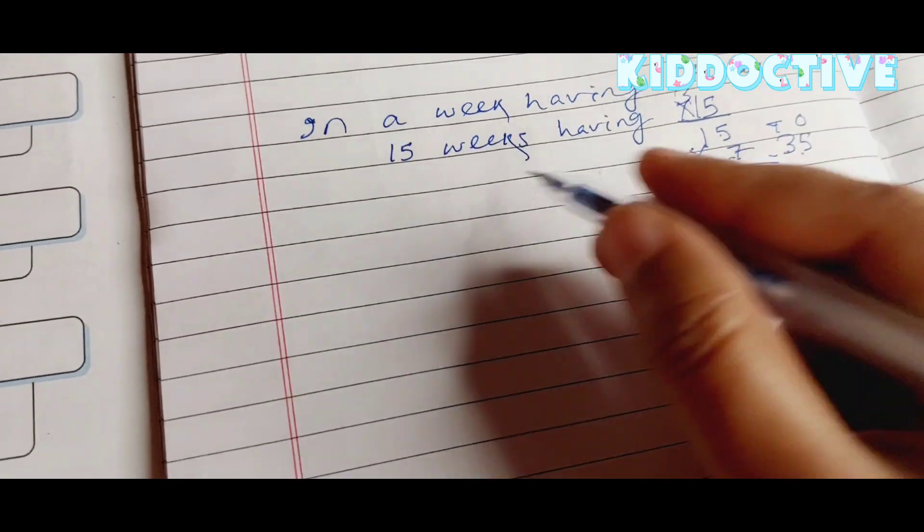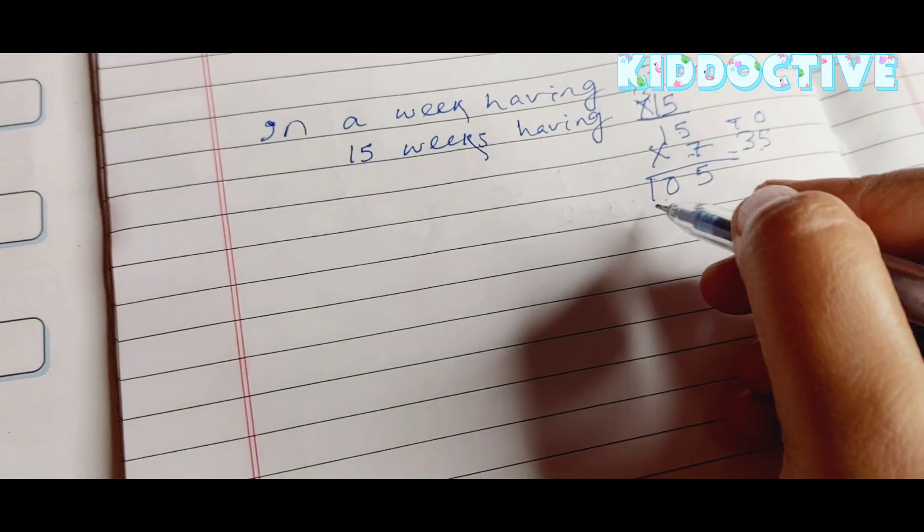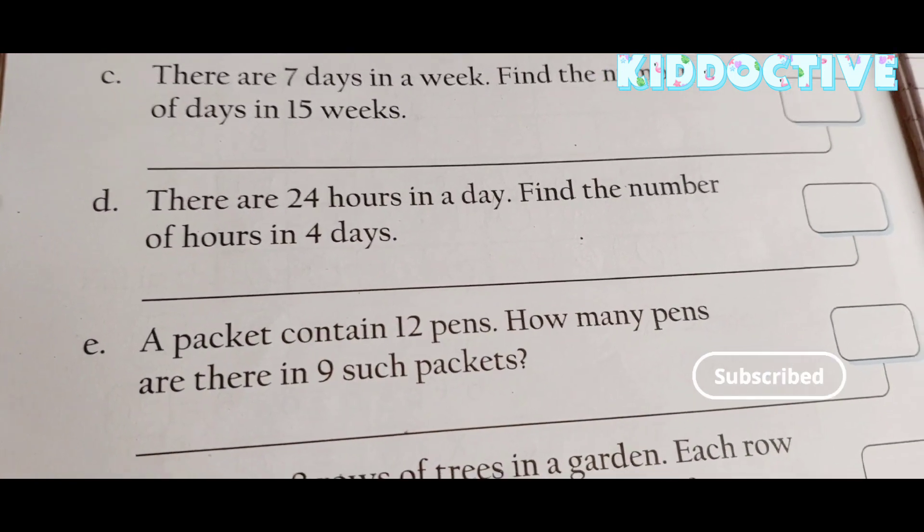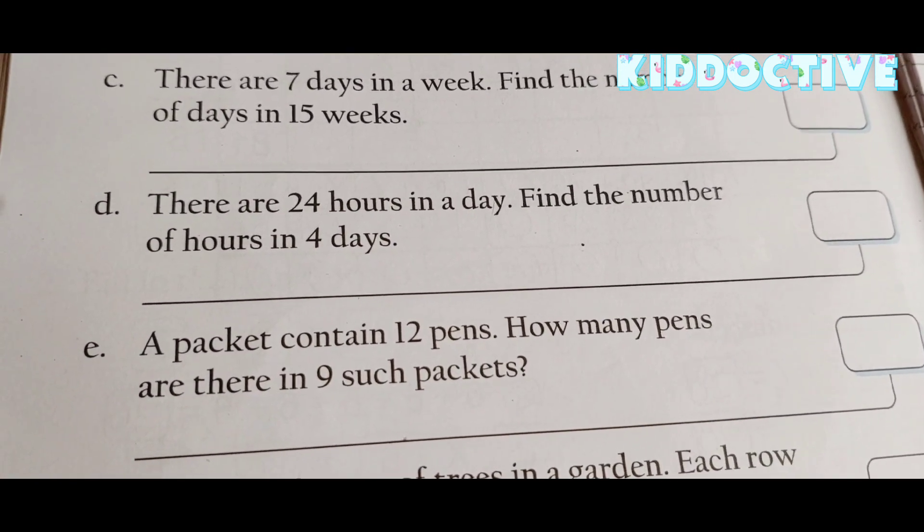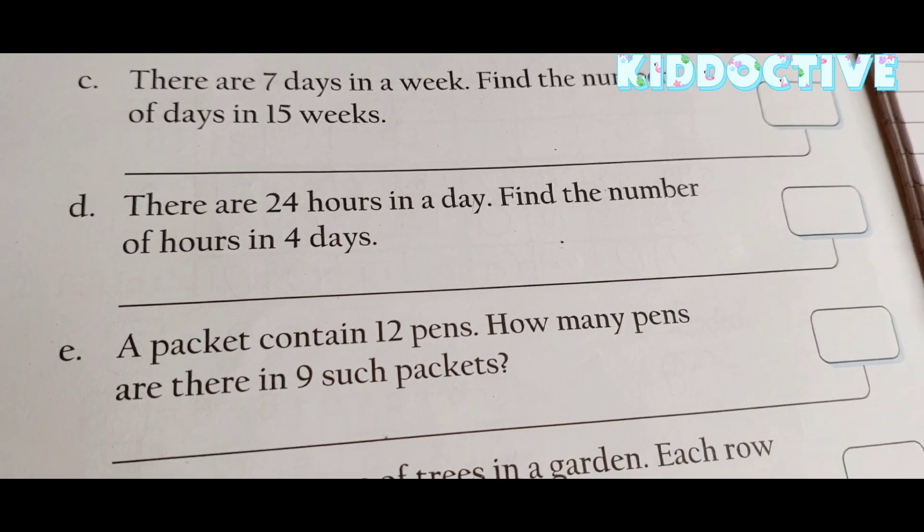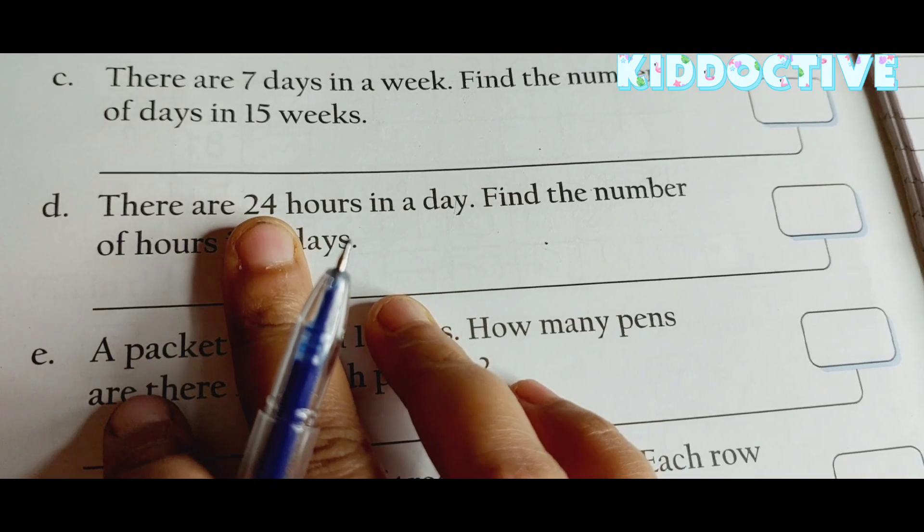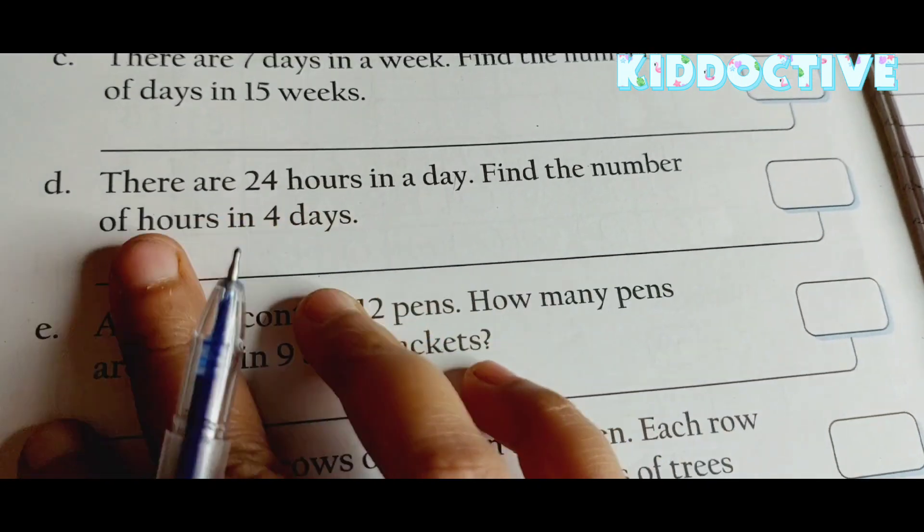Now coming to: there are 24 hours in a day, find the number of hours in 4 days. So in one day, how many hours? 24 hours.